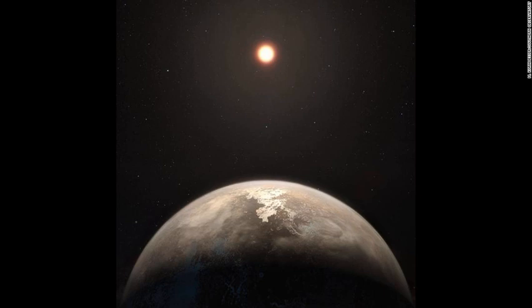Ross 128b is 20 times closer to its star than Earth is to the Sun, but because the star is small, dim, and cool, the planet would still be at a potentially comfortable temperature.